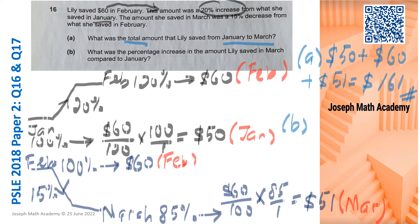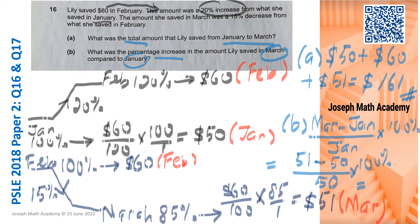To do part B, we are supposed to find the percentage increase. That means we have to find the difference between March and January out of the base and January times 100%. Now, March, she saved $51. January, $50. Out of the original 100% base of $50, then times 100%, that gives us 2%. So part B is done. Let's move on to the next slide.